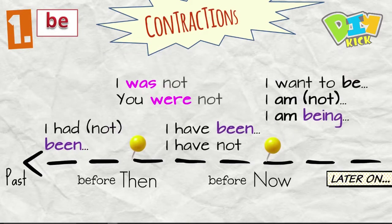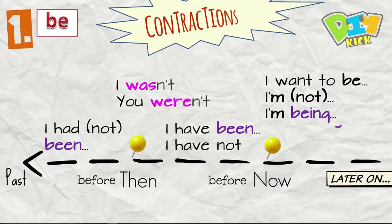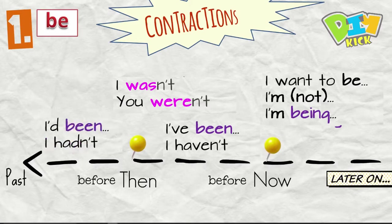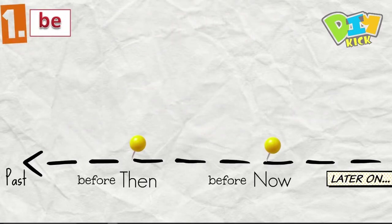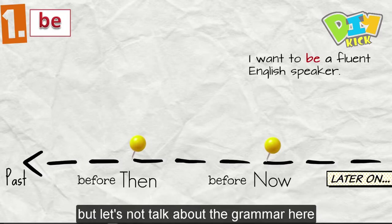Very important are contractions. So I am, it's I'm. Or the negative I was not, you were not. It's I wasn't, you weren't. I have been, I've been. I had been, I'd been. I want to be a fluent English speaker. So the verb to be is the basic form or we also say infinitive. But let's not talk about the grammar here.